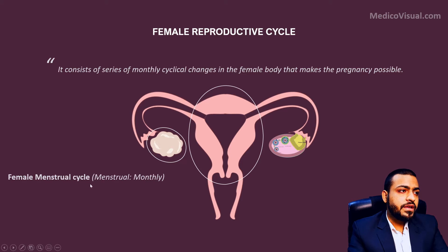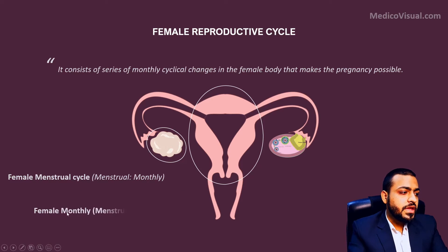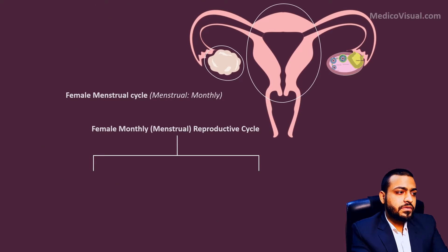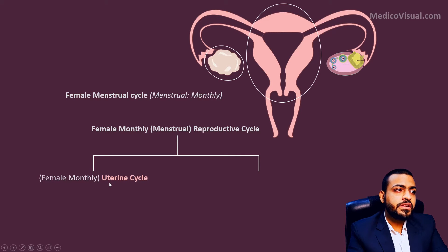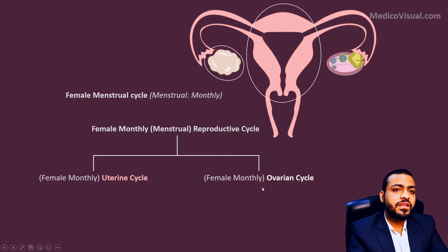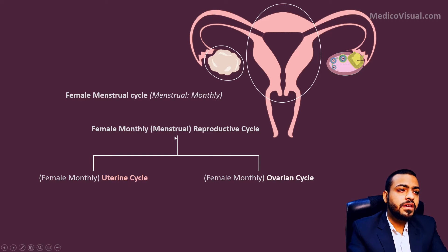The female menstrual cycle is another name for this cycle. Menstrual means monthly. Some people simply call it the menstrual cycle, but the complete name should be the female menstrual reproductive cycle because it is concerned with the reproductive ability of a female. The major changes occur in two organs: changes in the uterus constitute the uterine cycle, and changes in the ovary constitute the ovarian cycle.